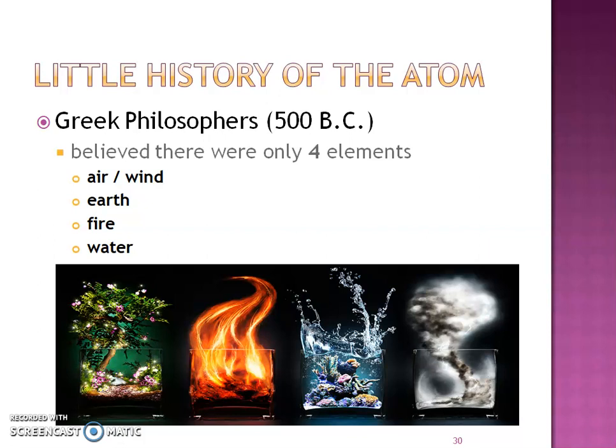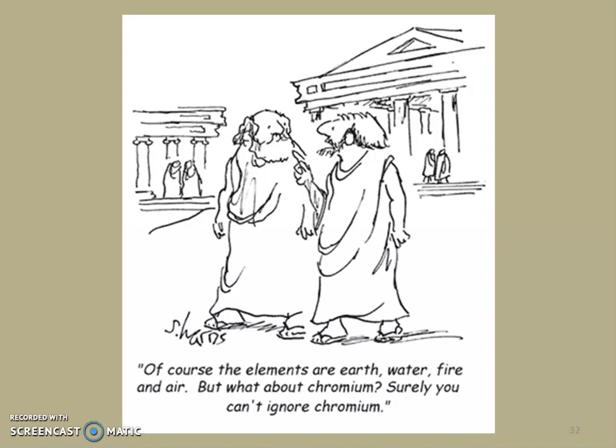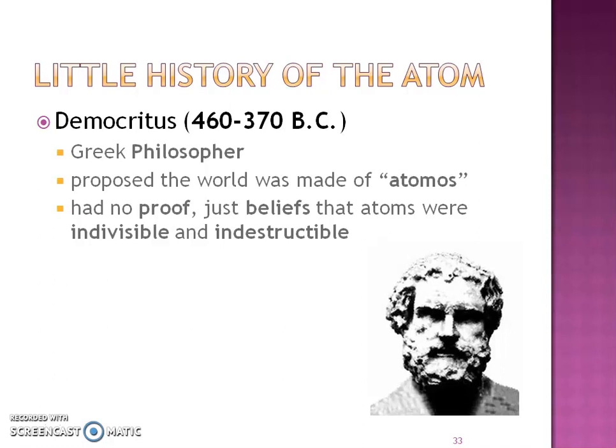A little bit of history. First, 500 B.C. — they actually thought everything was made up of four elements: air, earth, fire, and water. Why? Because they could actually see or feel these things. Then we have Democritus, a Greek philosopher. Philosophers back then just had thoughts. He said: I'm going to divide everything up, and if I make something small enough, that tiny little thing is going to be called 'atomos' because it's now indivisible or indestructible. But remember — he only had beliefs, no proof that this really existed.